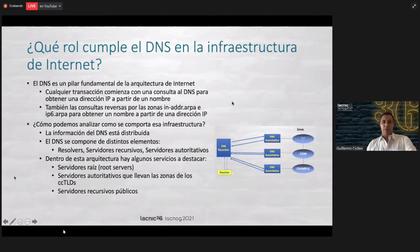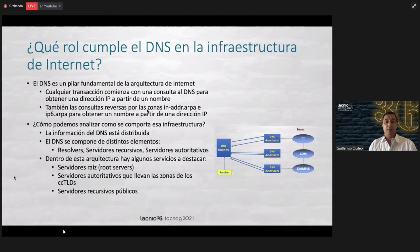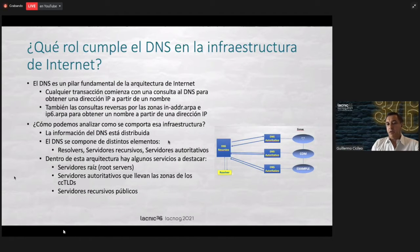Let's be brief. Well, as we all know, DNS is a key pillar of the architecture of the Internet. This is something that we have mentioned more than once. What type of data does the DNS have? Well, on the one hand, we have direct queries to get an IP address starting with a name, or also the reverse queries that are done in the zones in ARPA and IP6.ARPA to obtain a name based on the IP address.